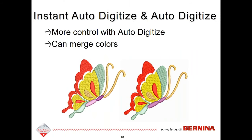Let's look at Instant Auto Digitize and Auto Digitize first. One of the handouts is called Auto Digitizing Basics, which shows the steps for applying different types of auto digitizing to the same picture. With Instant Auto Digitize, you simply click on the picture — no preparation — and stitches are automatically added. With Auto Digitize, you have more control because it first opens the Prepare Bitmap dialog box where you can merge colors. With artwork built into the software, you usually won't see much difference between the two tools.